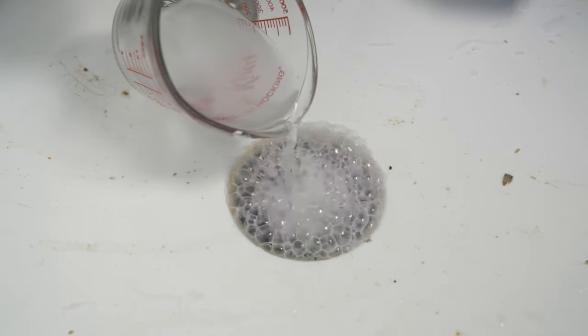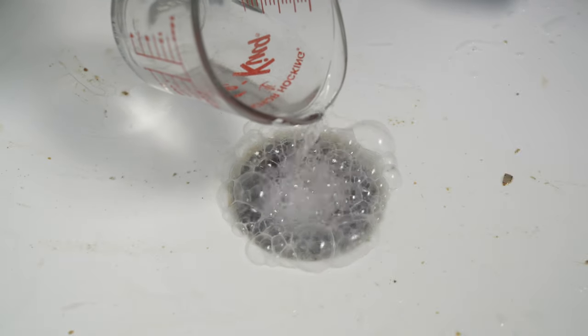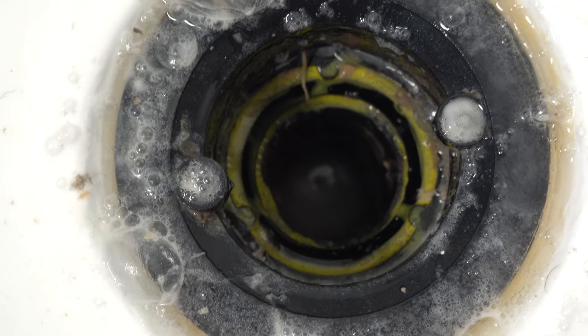As the two ingredients combine, a chemical reaction occurs that produces carbon dioxide and water, causing bubbling through the clog. This helps break up the obstruction, creating loose material.